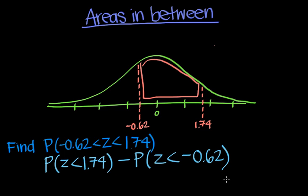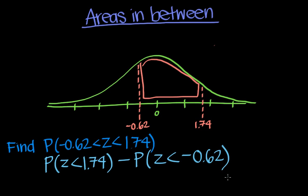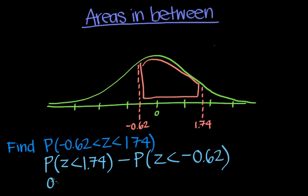So now let's find each of these probabilities on the normal distribution tables. Okay, first we'll find the area up to the z-score 1.74. So we go down the table and find 1.7, and then go across to 1.74, and we get 0.9591. So I'll write out 0.9591.